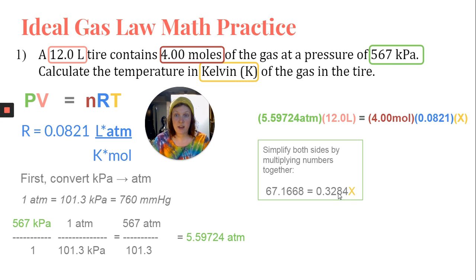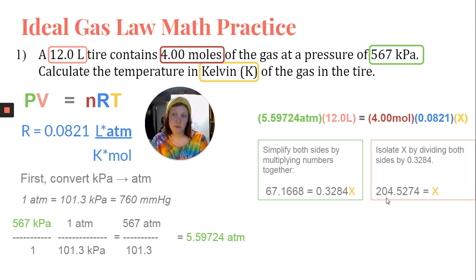Alright. So now that I've simplified those sides of the equation, I'm going to go ahead and isolate X. Right now, 0.3284 is multiplied by X. And in order to get X by itself, we need to divide both sides by 0.3284. When I do that, I end up with 204.5274 equals X. The last step is going to be rounding according to the rules of significant digits. If we look at all the values that have been given to us, each of them has three sig figs. So our final answer should also have three sig figs, which makes the final answer for question number one, 205 Kelvin.